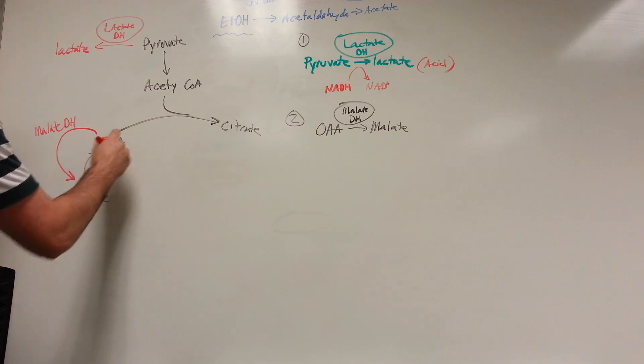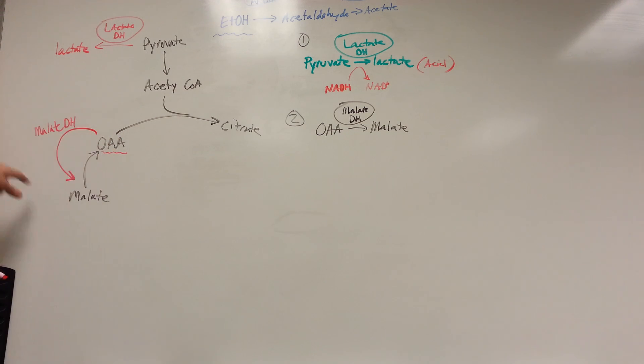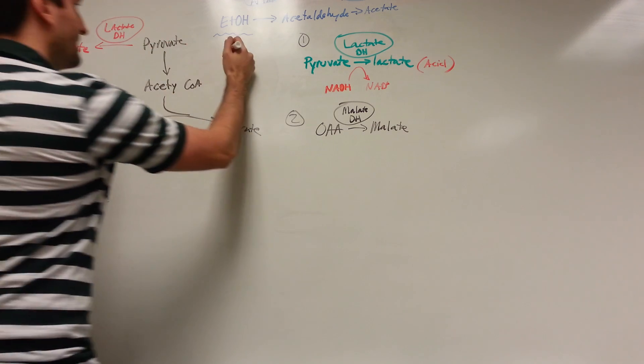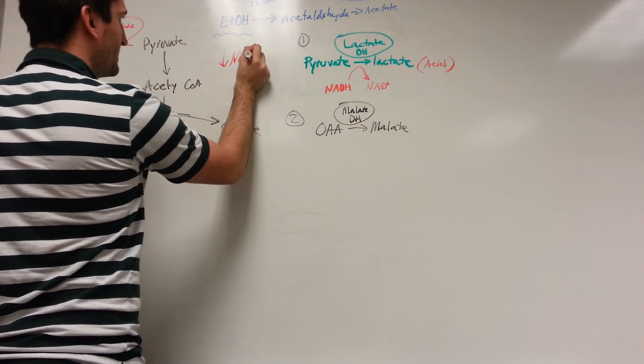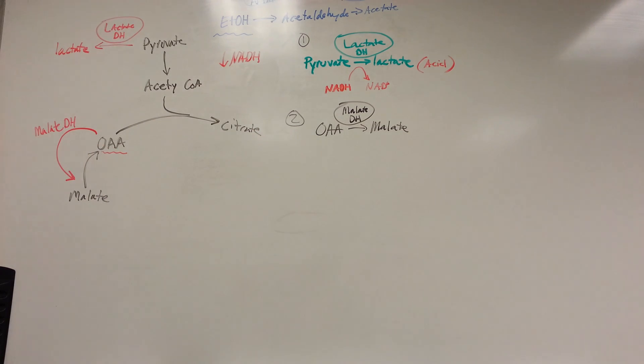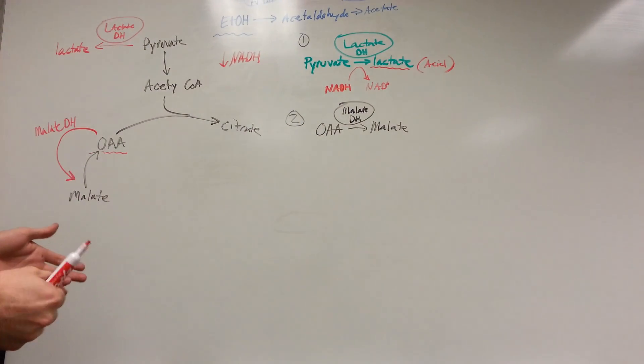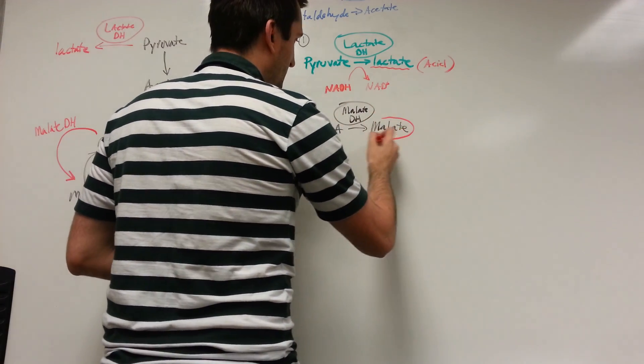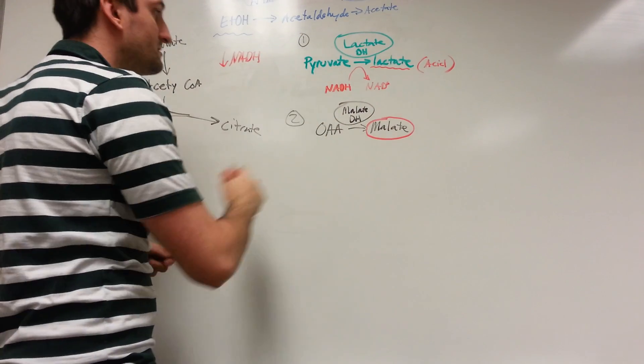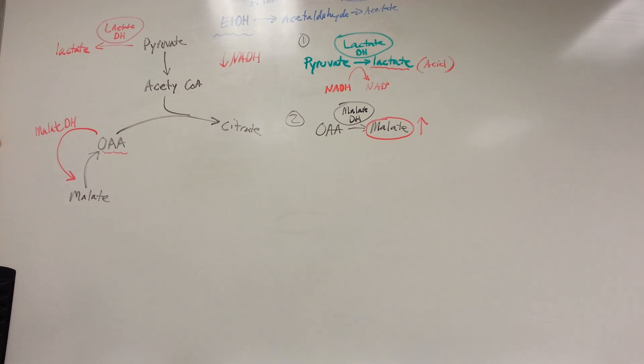Also, we're taking parts of the TCA cycle and putting them in reverse. Well, we all know that that's not going to generate a whole bunch of ATP. But that's not our goal. We're trying to lower the NADH reactions. So what's the net result? Well, we already said that we're going to have a lactic acidemia. So we're going to have an acidosis in the blood. But we're also going to have increased malate. Our bodies increased their malate. Well, that's not good. So how do we get rid of that malate?